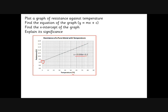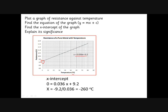If we extend this graph to the left — into negative Celsius temperatures — the resistance goes down and down until eventually there is no resistance at all. This happens because one model for resistance is that electrons bump into vibrating ions. When the metal is as cold as it can be, the ions stop vibrating and electrons lose no energy.